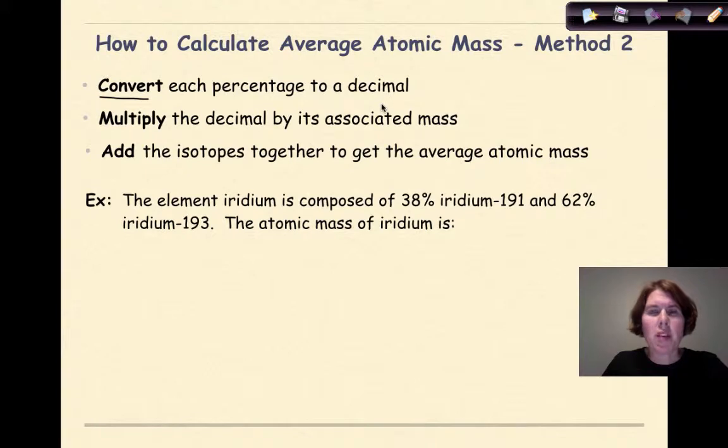I'm going to convert each percentage to a decimal. So the percentages that are listed, I'm converting them into a decimal. Then I'm going to multiply the decimal by its associated mass that's listed. Then finally, I'm going to add the isotopes together to get the average atomic mass. So we're going to use the exact same example again, but going with this particular method. So one more time, the element iridium is composed of 38% iridium-191 and 62% iridium-193. The atomic mass of iridium is, so I'm going to take that first percentage, which is 38%, and I'm going to convert it into a decimal, 0.38, and then I'm going to multiply it by its mass, 191, plus the 62% I'm going to convert into 0.62, and I'm going to multiply it by its mass, 193.